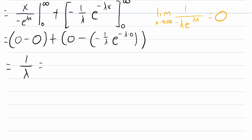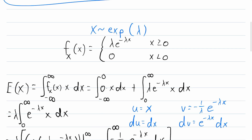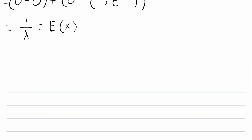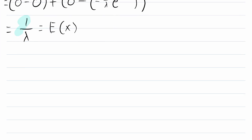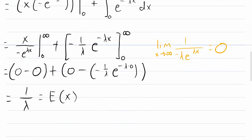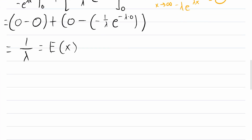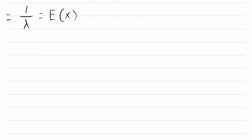So that is the expected value of the exponential distribution. If x is an exponentially distributed random variable with parameter lambda, then the expected value is 1 over lambda. That's a pretty fun integral — we really had to get down and dirty for that one.